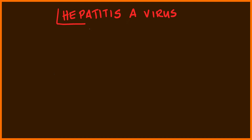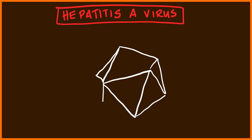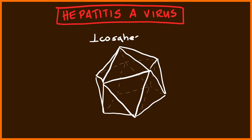Hello and welcome to my new video where I'll be discussing the Hepatitis A virus. I'm going to begin by looking at the structure of the virus, and as you can tell, it's made up of several triangles put together in what's known as an icosahedral pattern.